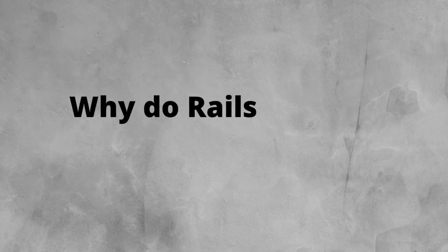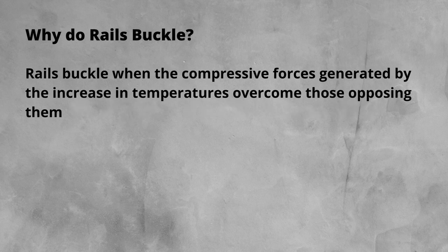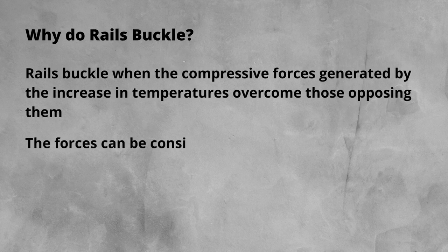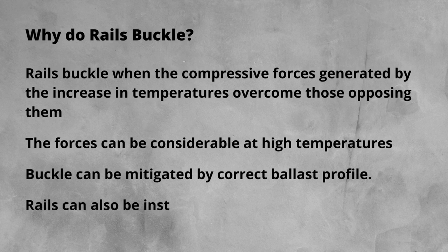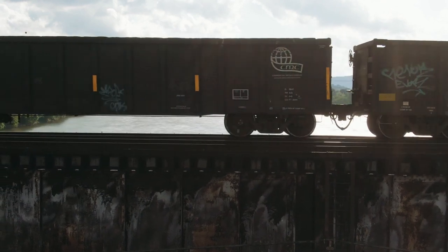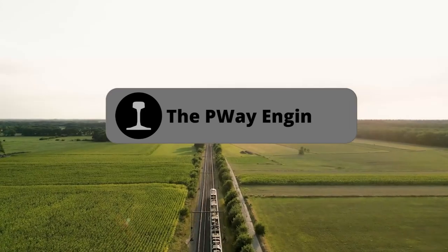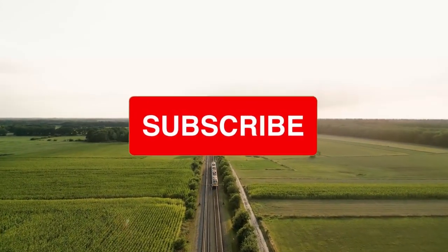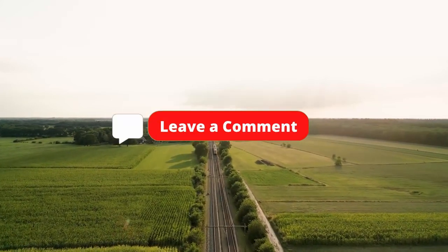So time to sum up. Buckles occur when compressive forces within the rails, generated by the increase in temperature, overcome the forces opposing them. These forces can be considerable when temperatures climb. The risk of a buckle can be mitigated by ensuring correct ballast profile to resist the forces in the rails. Rails can also be installed in tension to reduce the compressive forces. Thank you very much for watching — please give the video a like if you found it useful, subscribe so you don't miss out on new videos, and any questions or comments, let me know below.